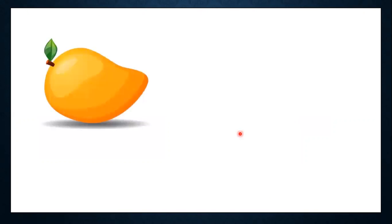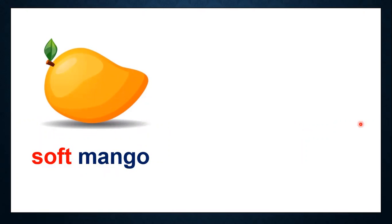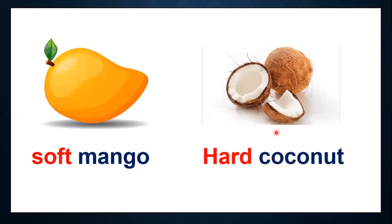Now let's see another example. This is a mango. When we touch a mango, how do we feel? It is a soft mango. So how we feel when we touch something — with that we can also describe. We can say it's a soft mango. Now what can we say about this coconut? You can say it is a hard coconut. When we touch the outside, it is hard. So soft and hard are the words we use to describe them — they are also adjectives.